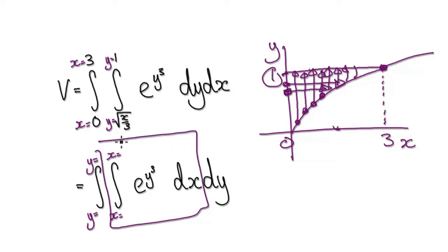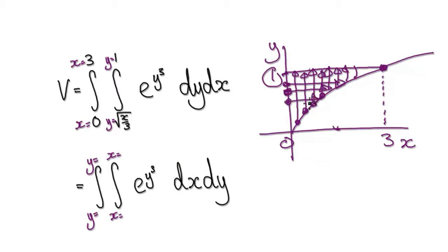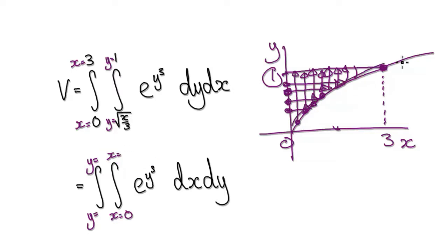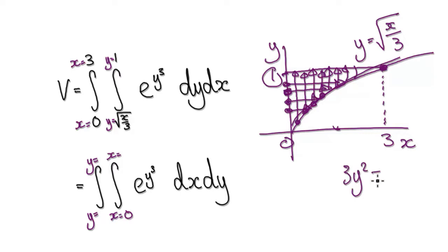In the dx we're moving along the x-axis, starting at x equals zero and ending at the line. This line is y equals root(x/3), but we need x as the subject. So rearrange: square both sides and multiply by three, giving x equals 3y².